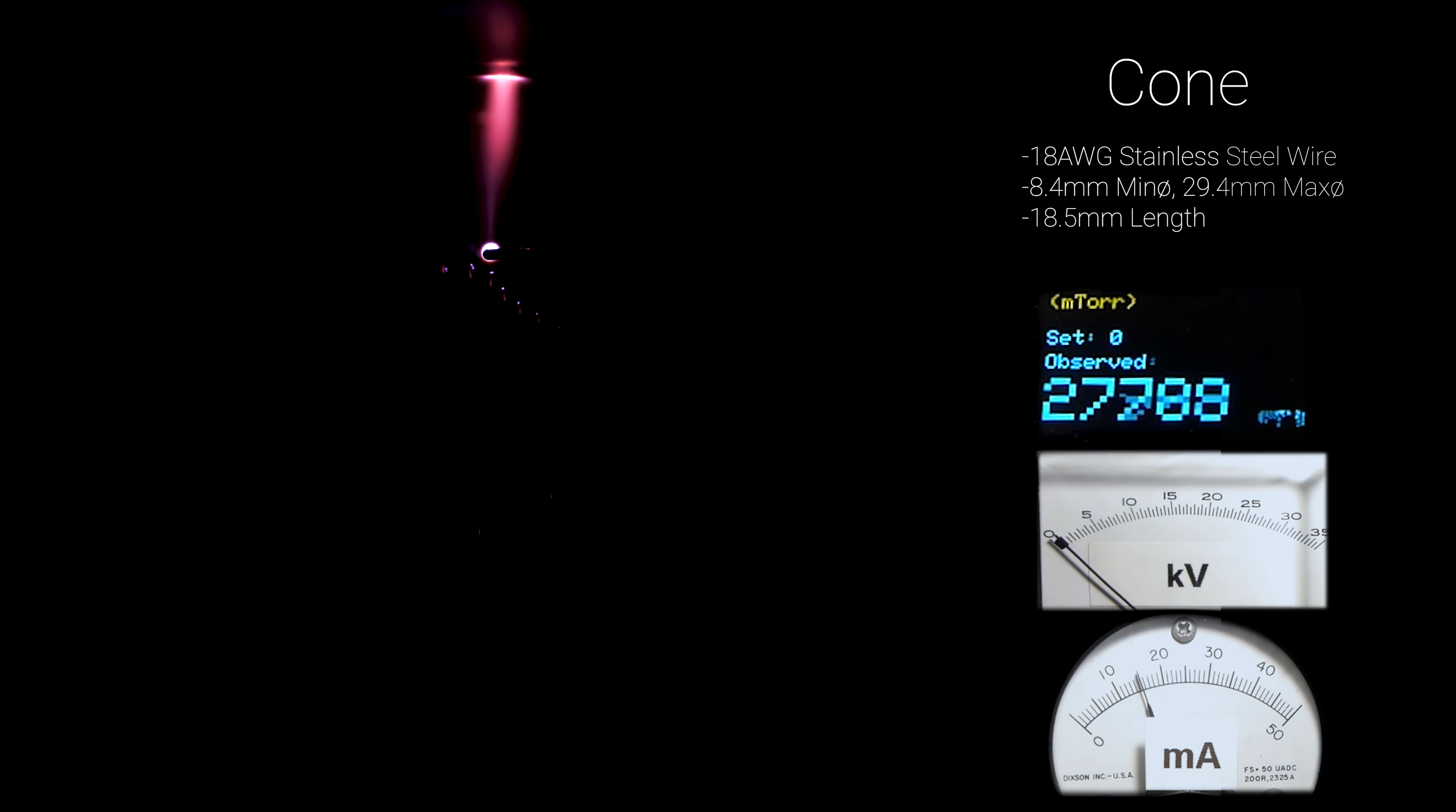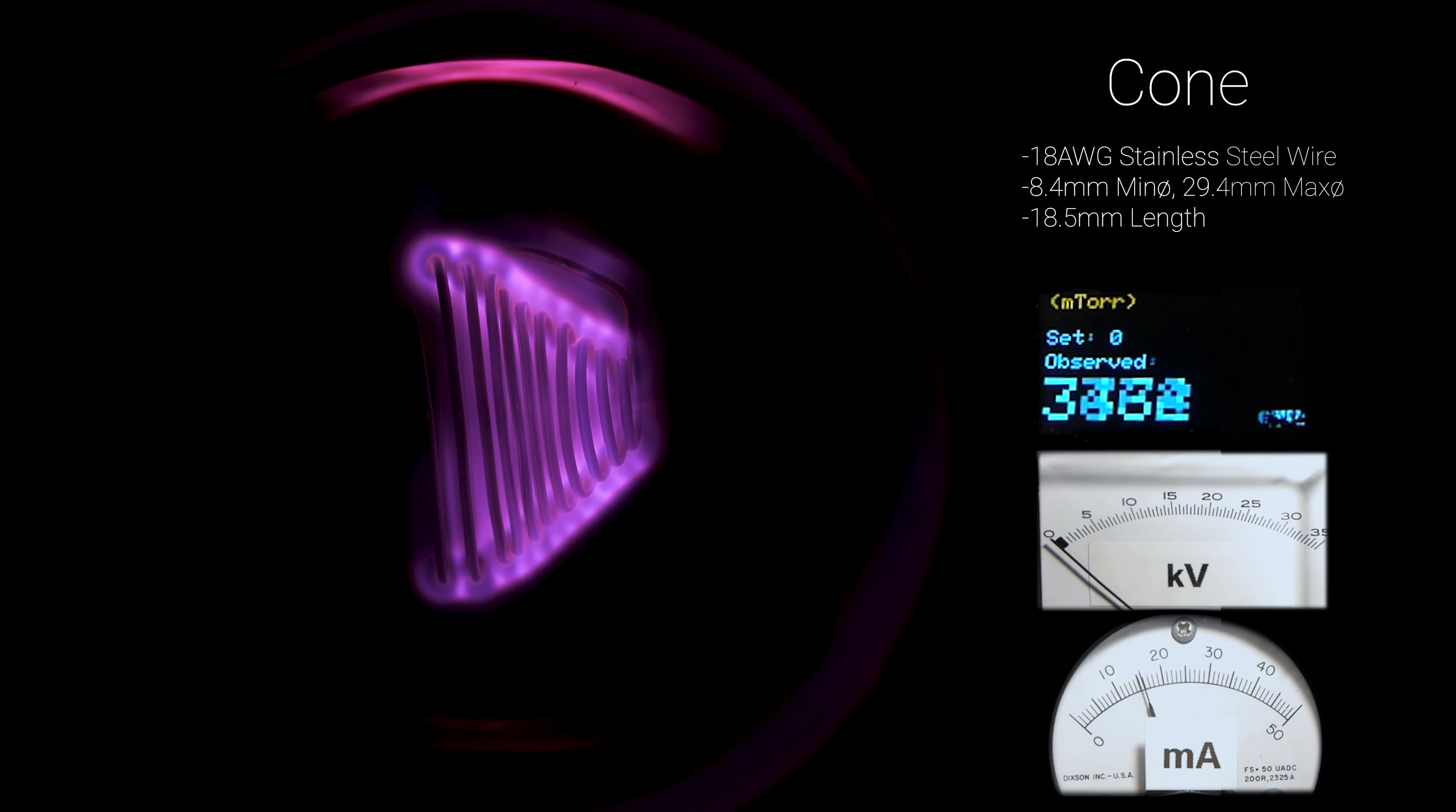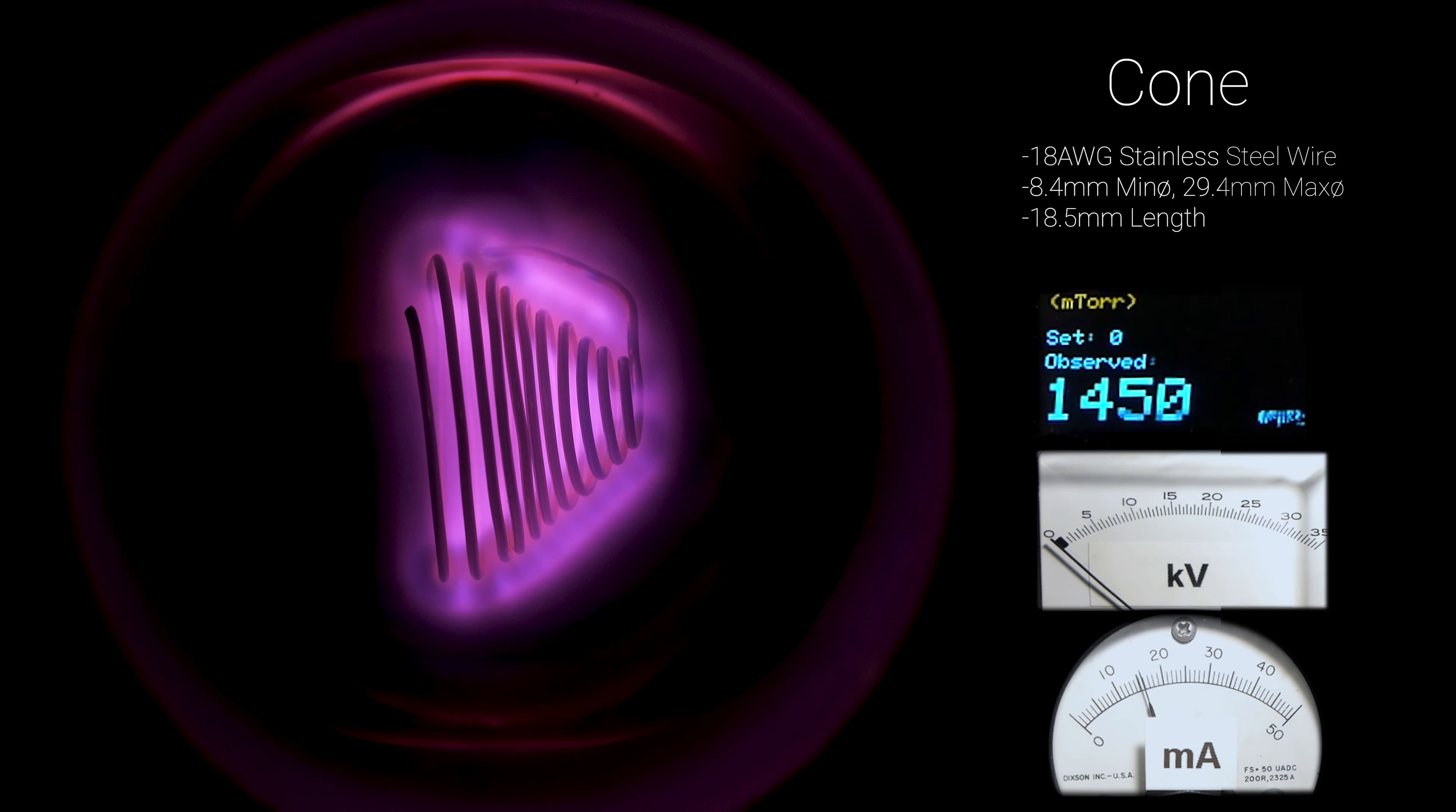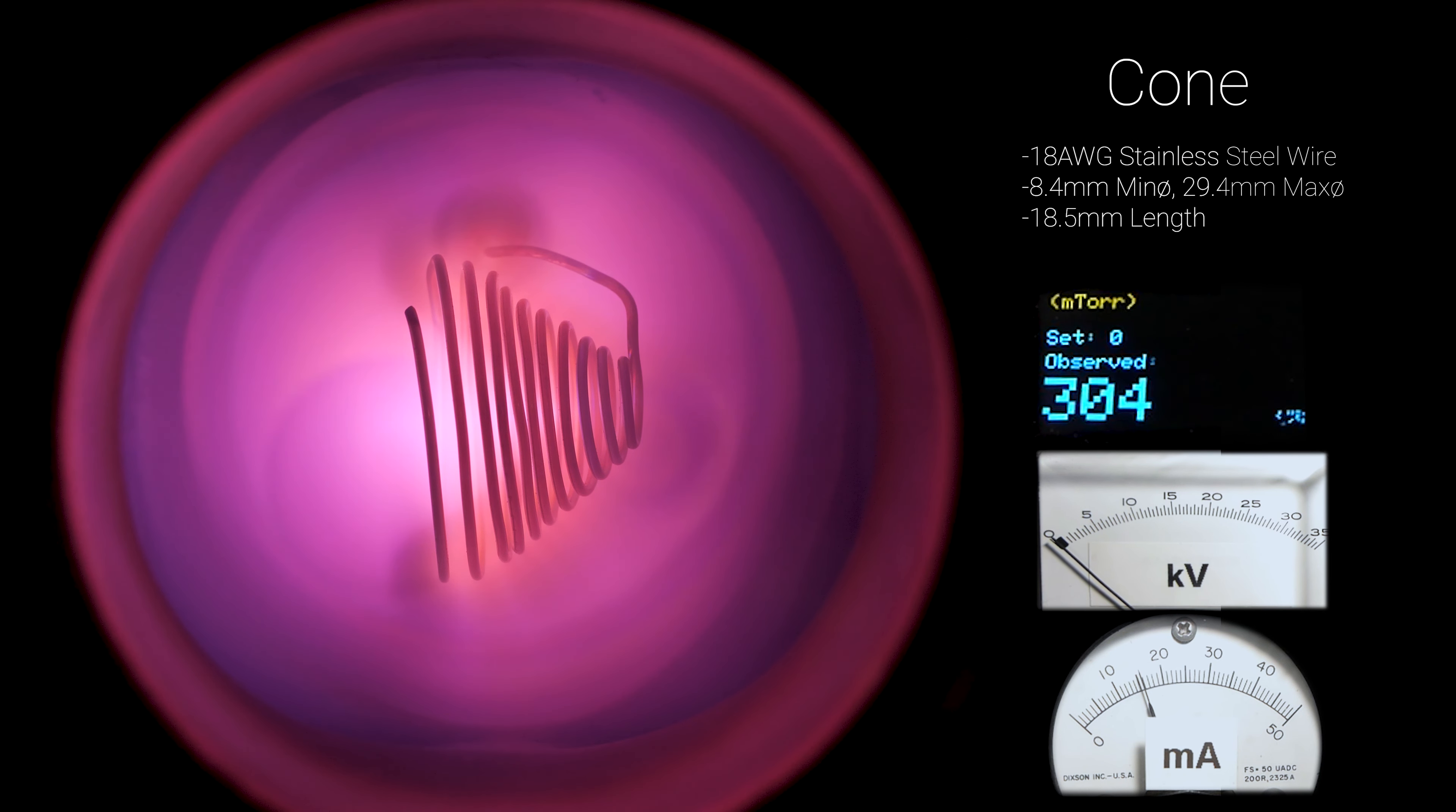I thought it would be interesting to introduce some asymmetry to the plasma with the cone-shaped grid. Admittedly, I thought I might see the plasma act more like a nozzle, concentrating and accelerating the particles to the right of the grid through the narrow aperture, but that didn't seem to be the case. If anything, we found the exact opposite effect.